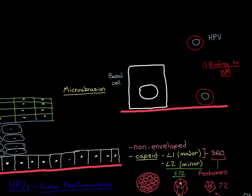The question now becomes: what is the initial binding receptor — the primary receptor for HPVs? The initial binding will be mediated by L1. Importantly, L2 is not actually essential for the first part of the entry mechanism at all — it only becomes important right at the end.